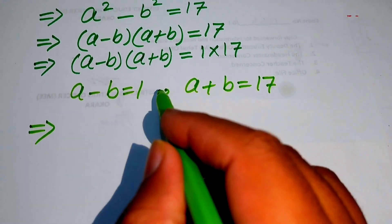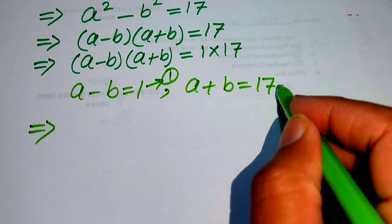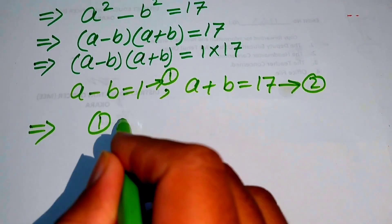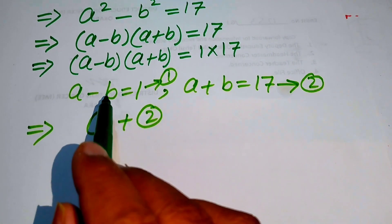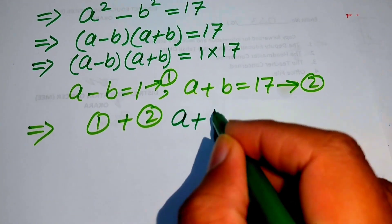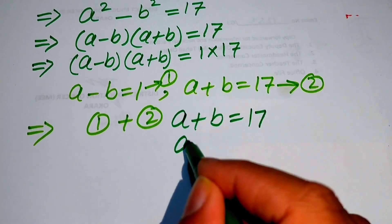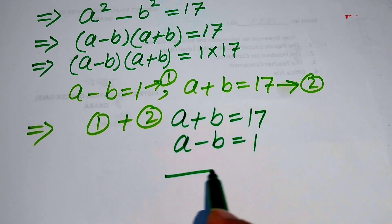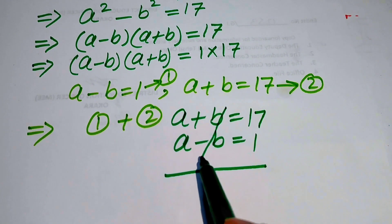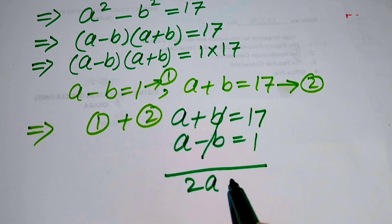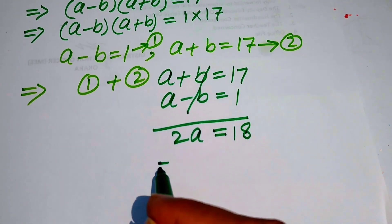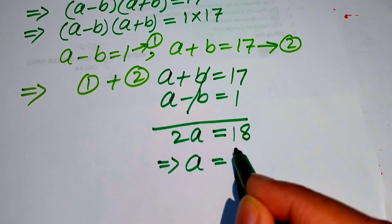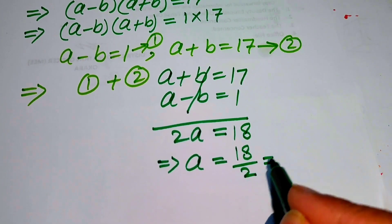We call a minus b equals 1 equation one, and a plus b equals 17 equation two. To find the value of a, we add equation one and equation two. The negative b and positive b cancel each other. We get 2a equals 17 plus 1 equals 18, which implies a equals 18 divided by 2, so a equals 9.